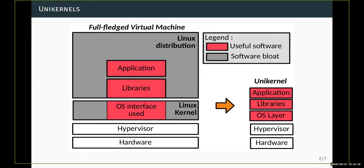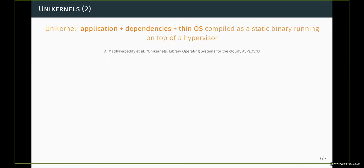One solution to that problem is using a unikernel. With a unikernel, you compile your application sources with just the necessary libraries and a very small library operating system into a single binary, and it is able to run as a guest operating system on top of the hypervisor. So this is the definition of a unikernel.